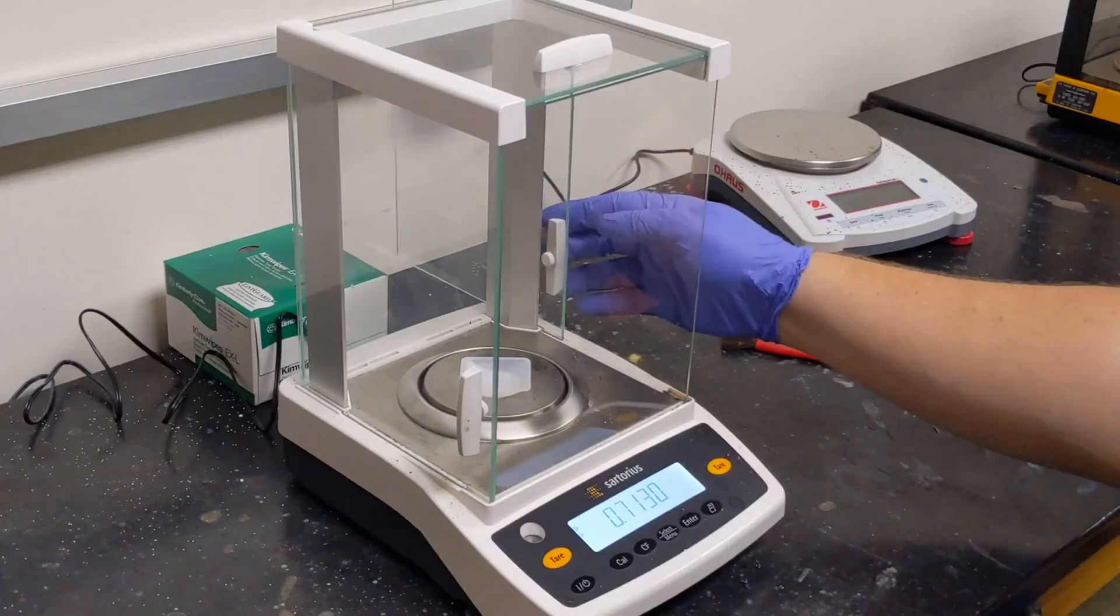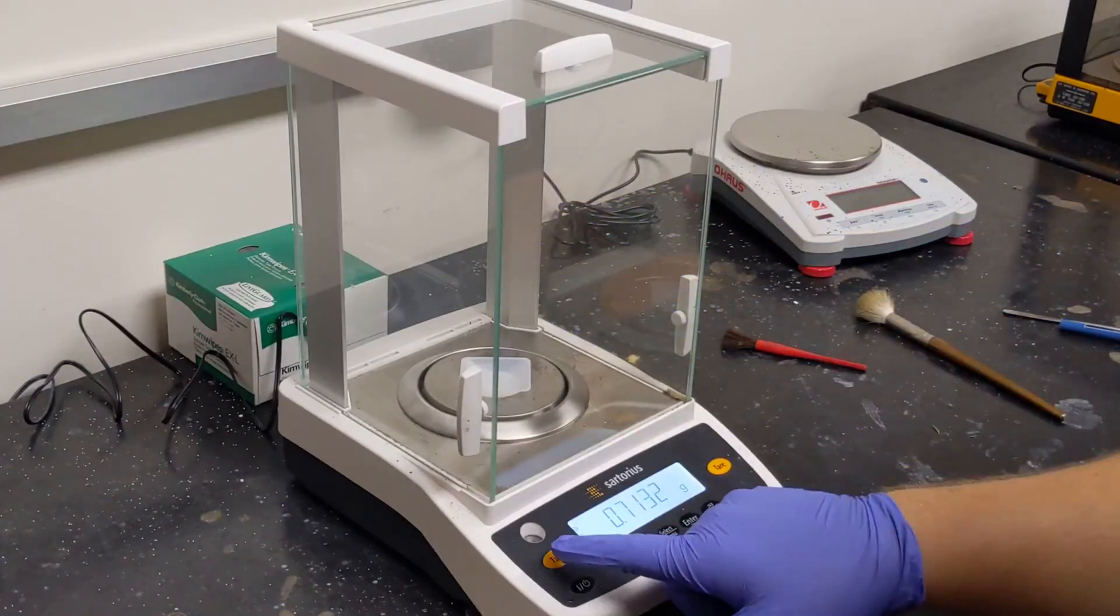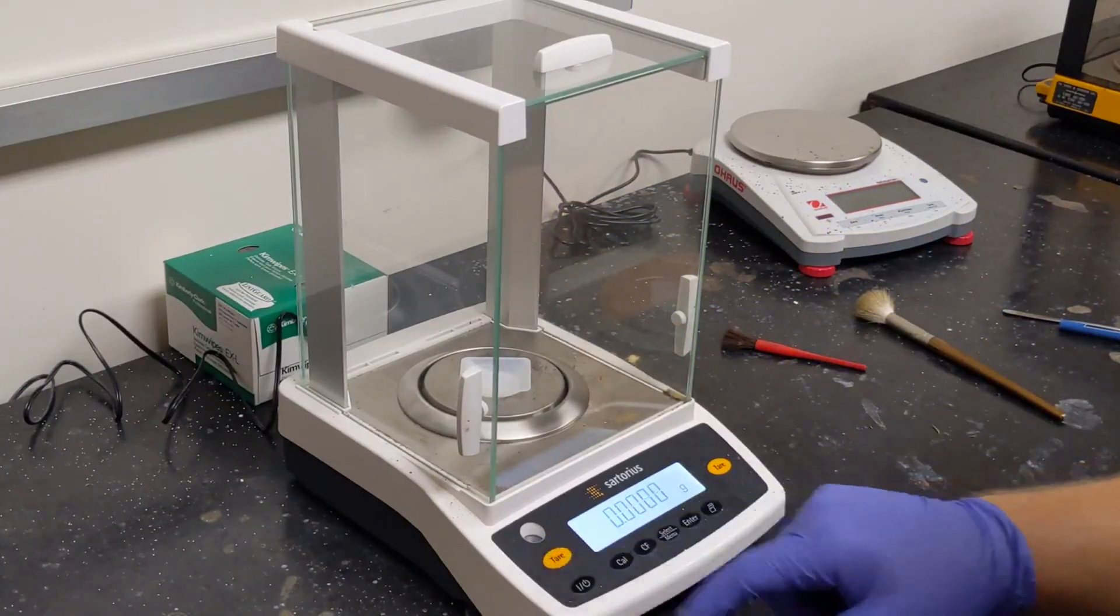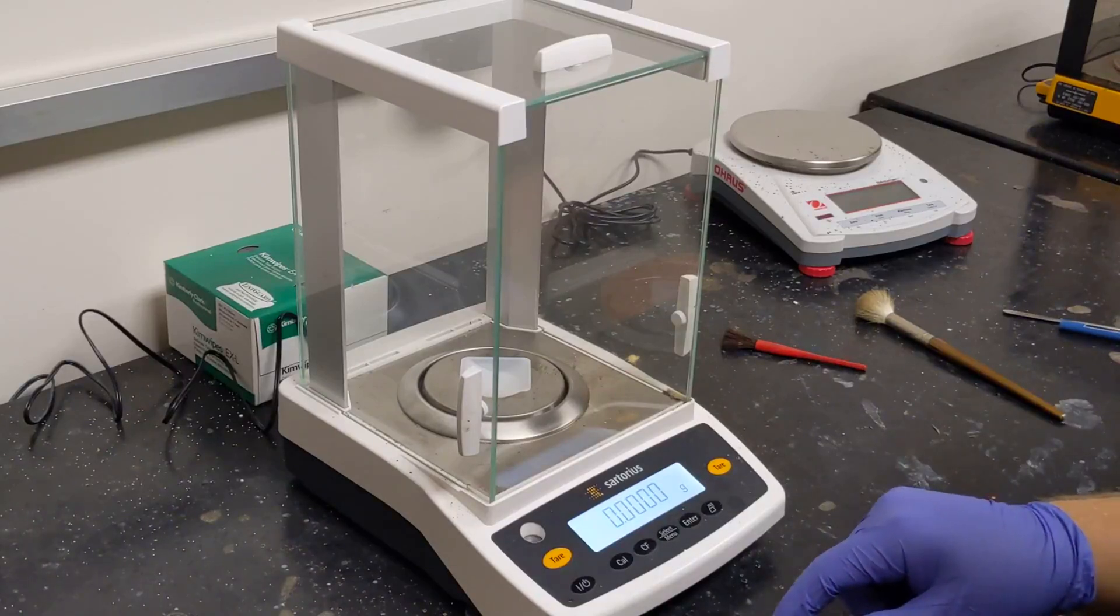Now we need to close the door to the balance and tare the balance. That's the large yellow button. When we press that, the mass for the balance will be zeroed out to account for our weighboat.